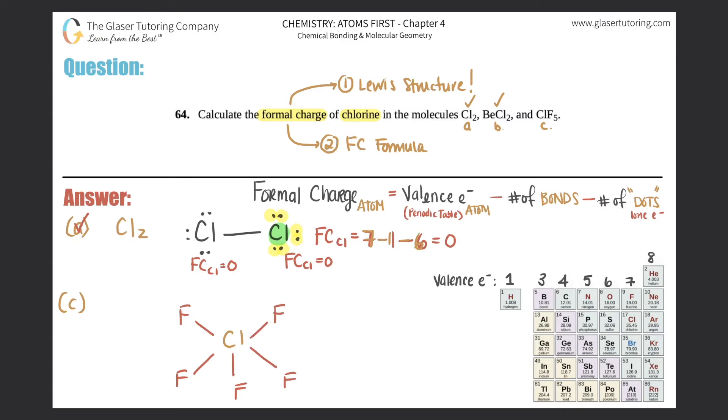And then actually you have one lone pair here and each fluorine will have the three lone pairs. So I'm just kind of figuring this out, just so that you guys can match your Lewis structure. This would be the proper structure for ClF5, ClF5.